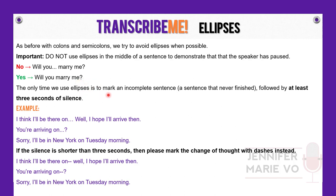The only time we use ellipses is to mark an incomplete sentence that never finished, followed by at least three seconds of silence. So if a speaker said "Will you..." and three seconds of silence passed, then you could write "Will you...?" But only if the sentence was never completed. For example, in a phone conversation: "I think I'll be there on..." — the sentence is incomplete and followed by three seconds of silence, so we use ellipses.